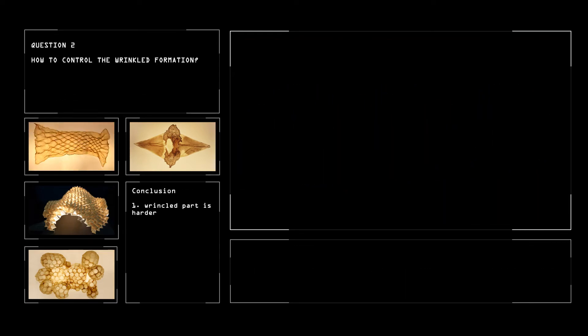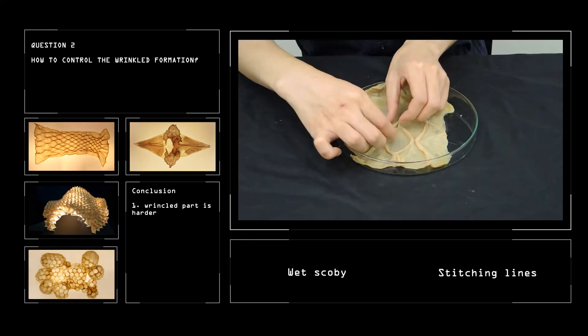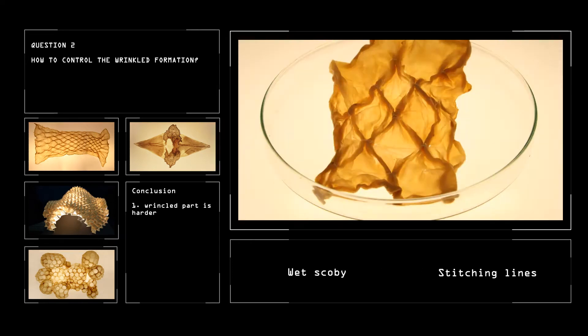So we developed the second technique, stitching. We use knots to control the wrinkled behavior of cellulose and form patterns.